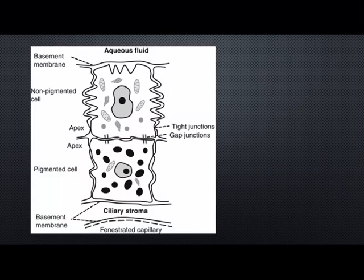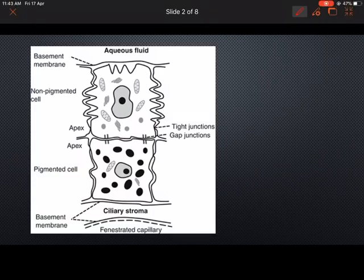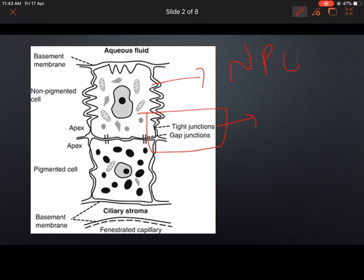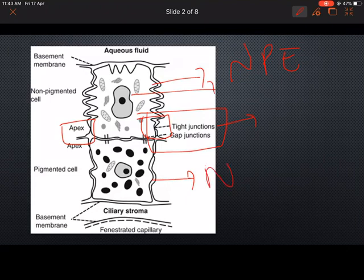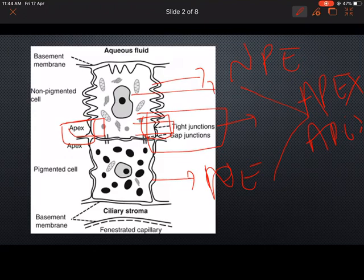The thing which I forgot in the first part is some important junctions — gap junctions and tight junctions which are present. Tight junction is present in the non-pigmented epithelium, on the lateral aspect near the apex. The pigmented epithelium and non-pigmented epithelium are in apex-to-apex configuration.